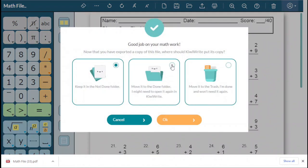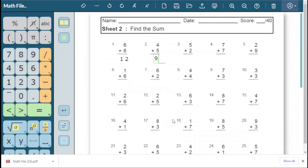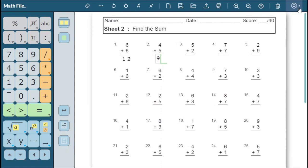If KiwiWrite displays a file you don't want to work on, open a new file by clicking the new file icon. To turn in your work, you must print or export it to get a downloaded copy.